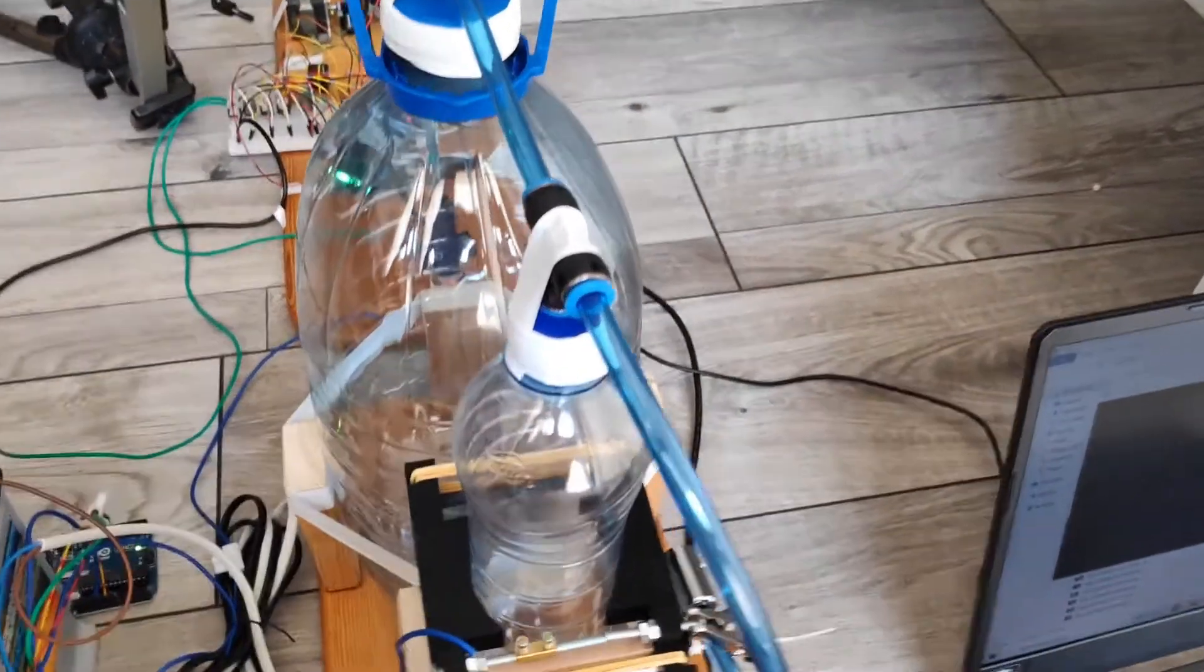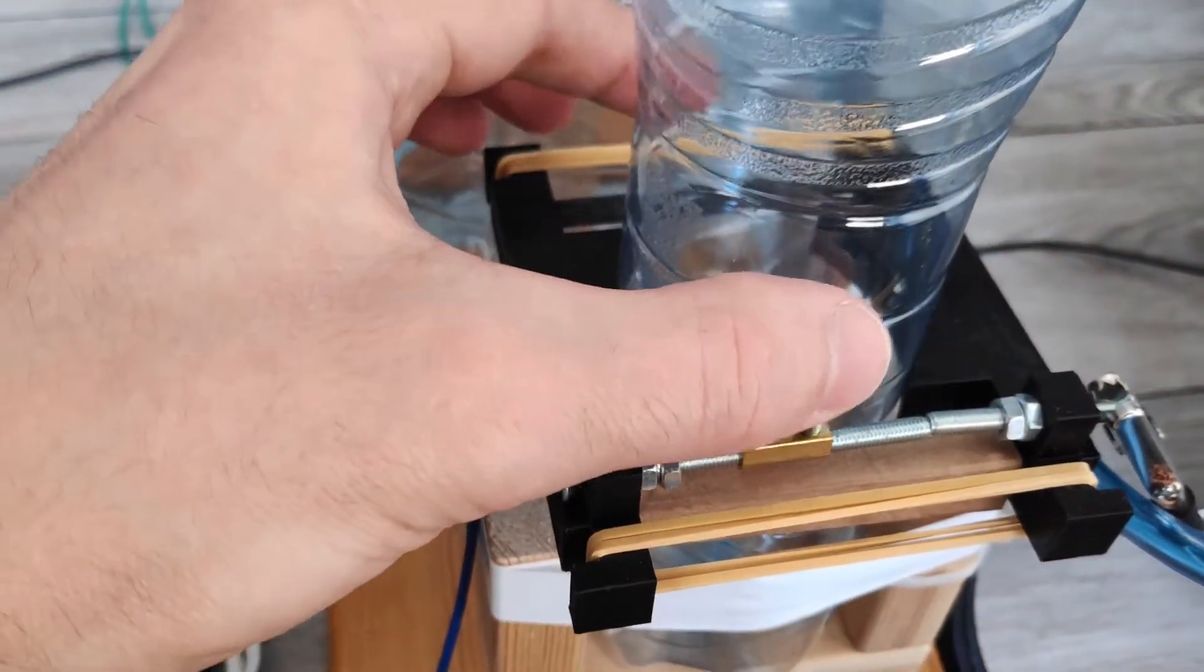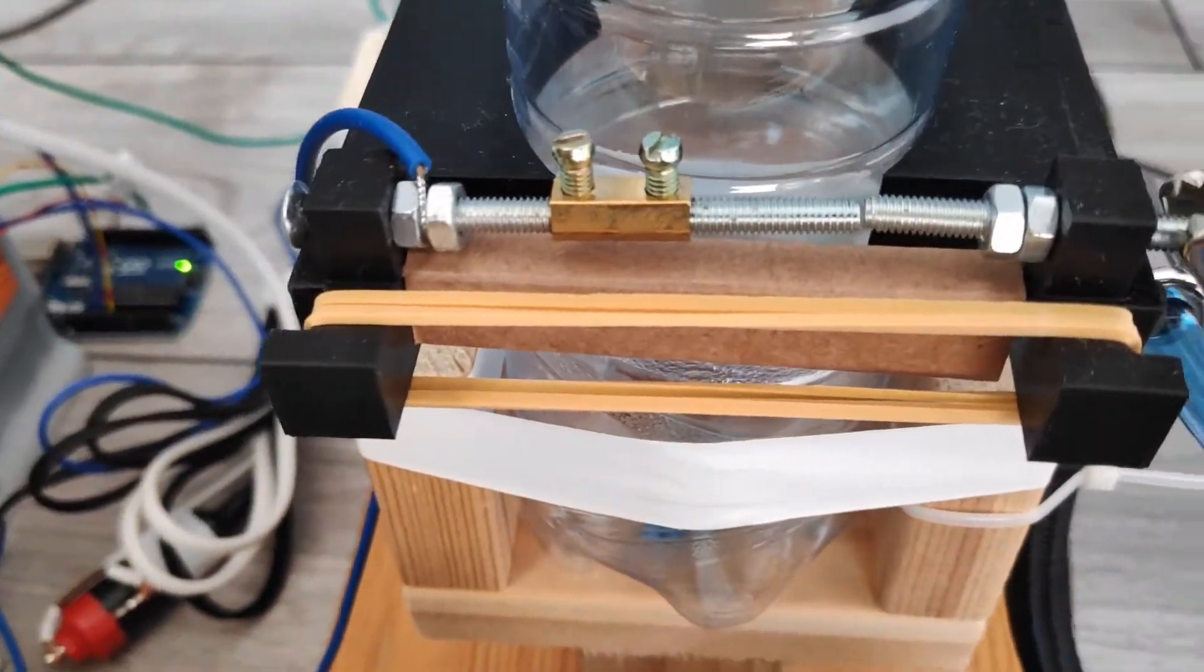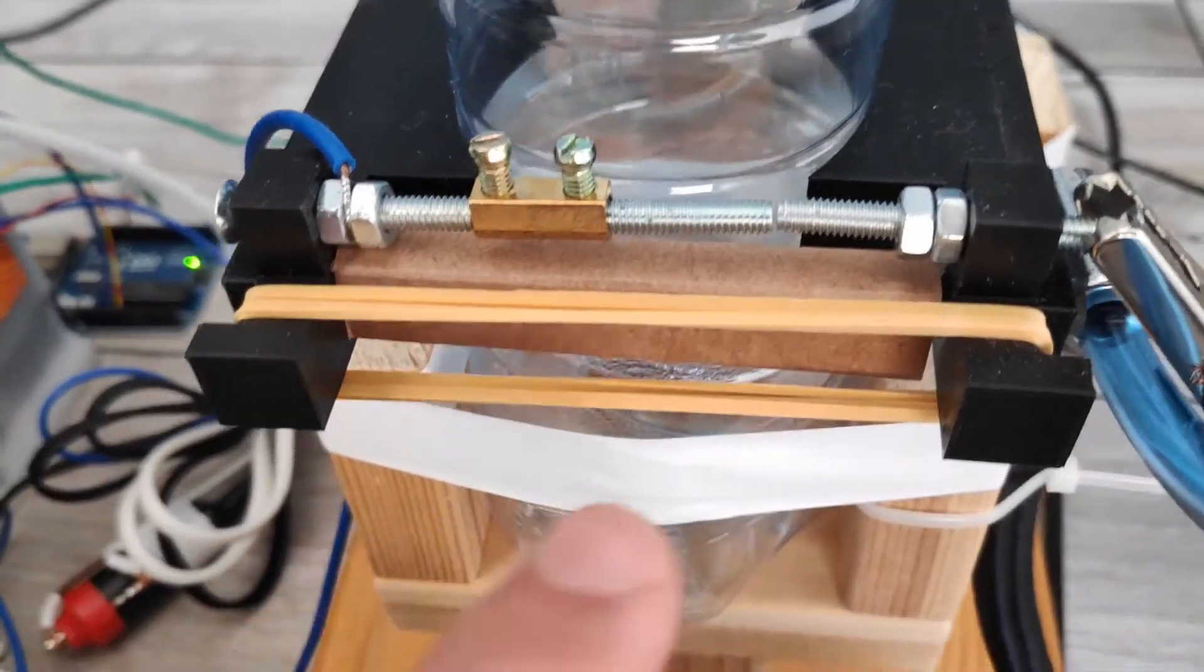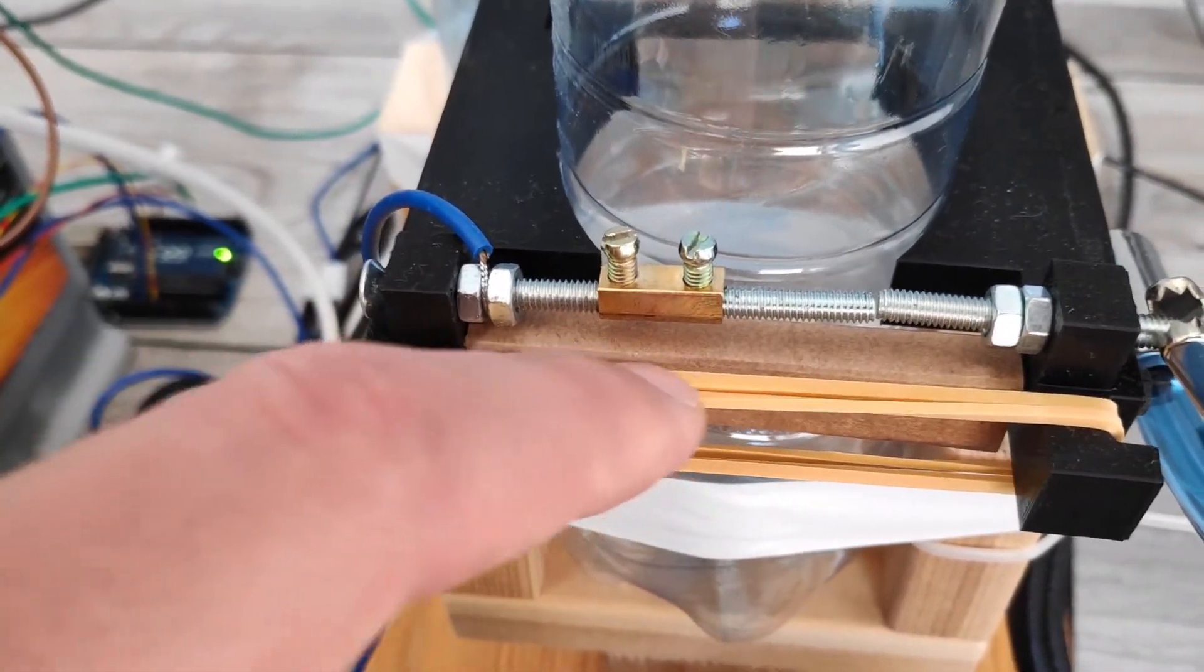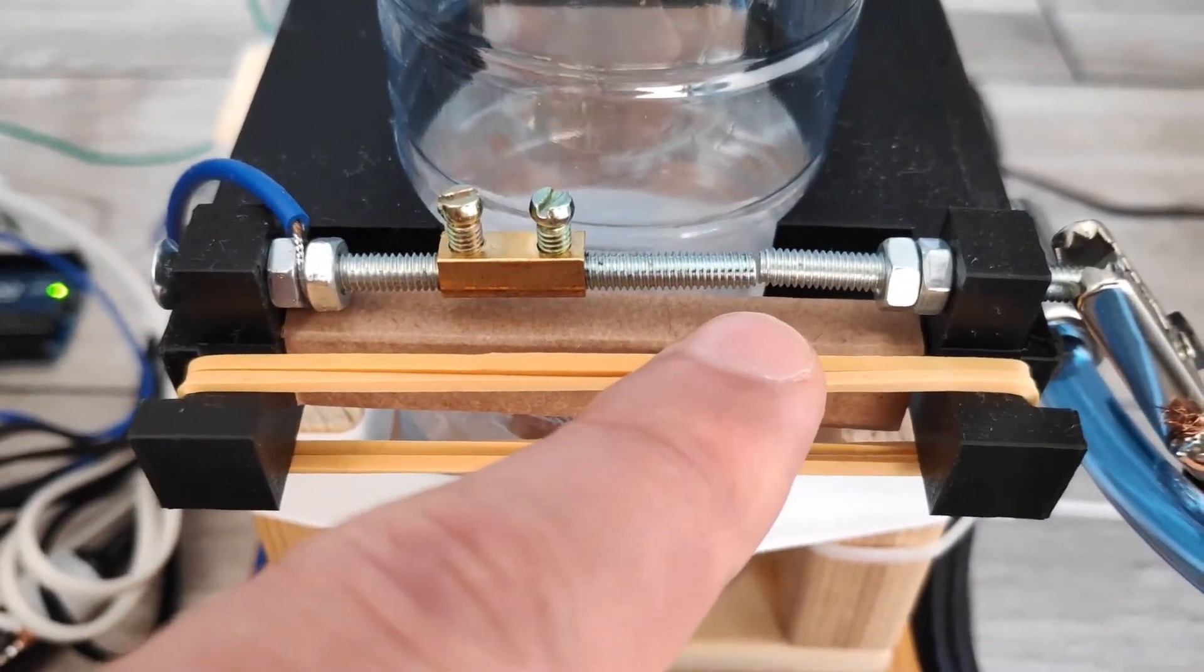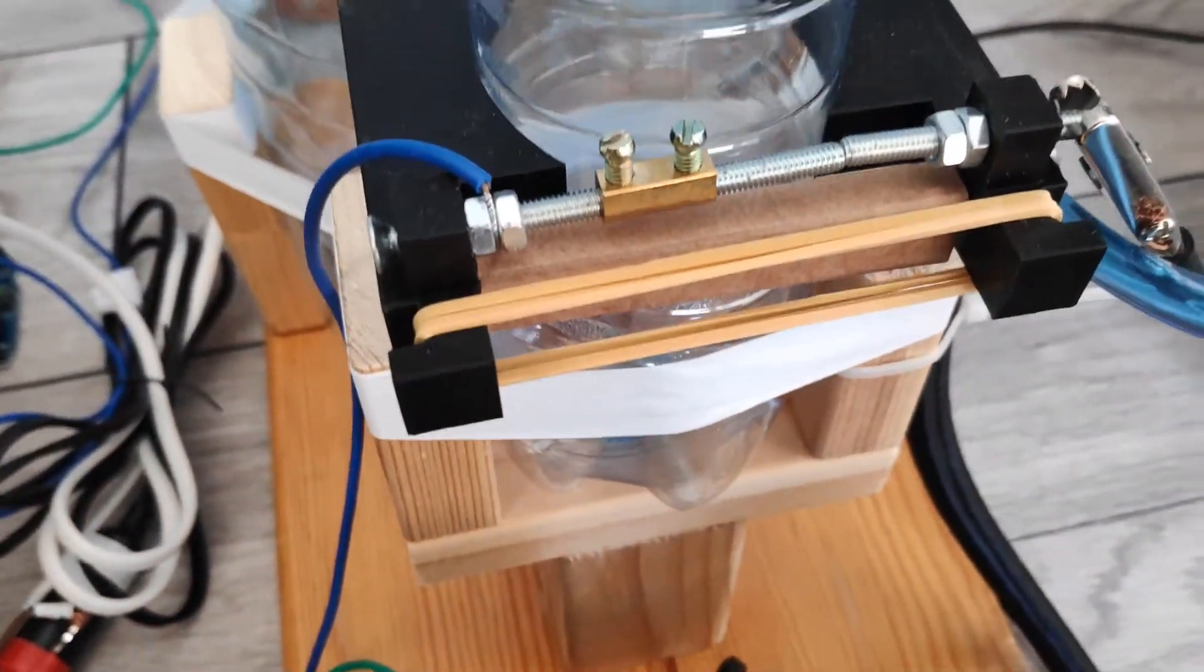The last part that I want to talk about is the compressed air sensor. Right now there is compressed air inside the bottle. Here you can see two screws that have wires attached to them and those wires are connected to the Arduino board. You can see that there is a small gap between those two screws. These rubber bands are trying to squeeze the two screws together but the compressed air inside the bottle is trying to separate them. Once the pressure in the bottle goes down to a certain value a contact between the both screws is created.